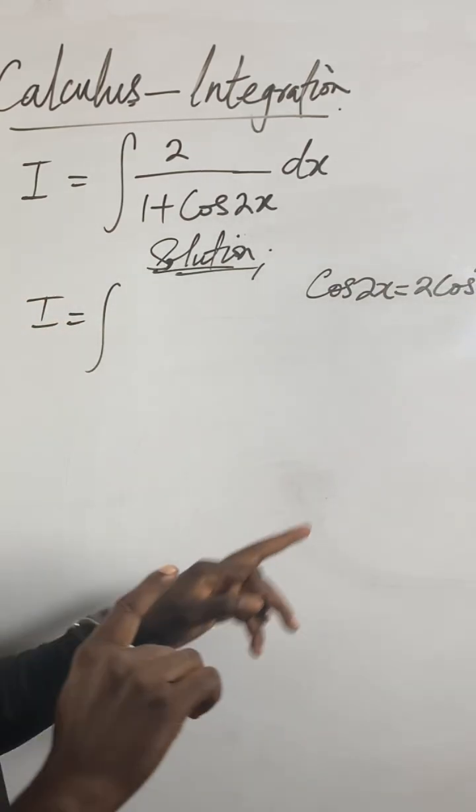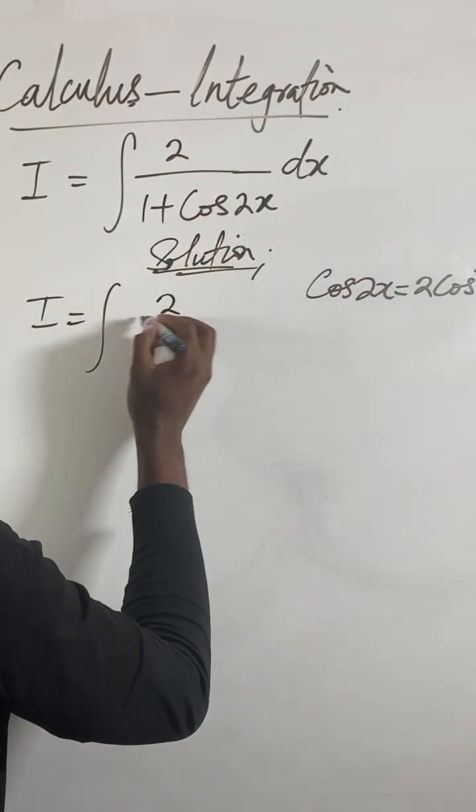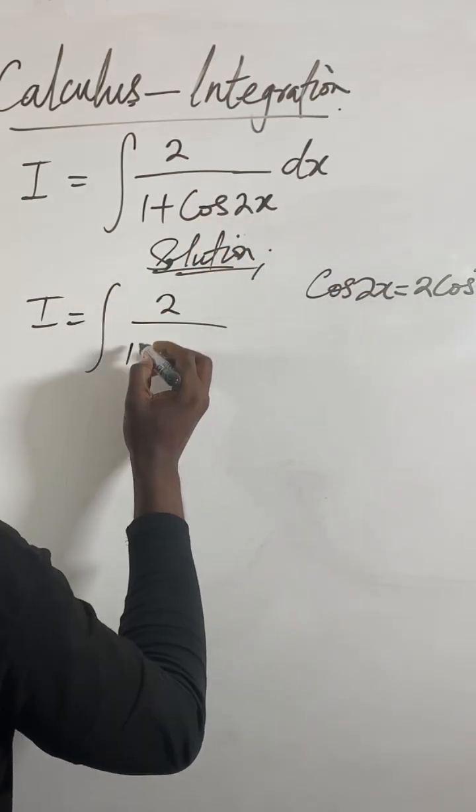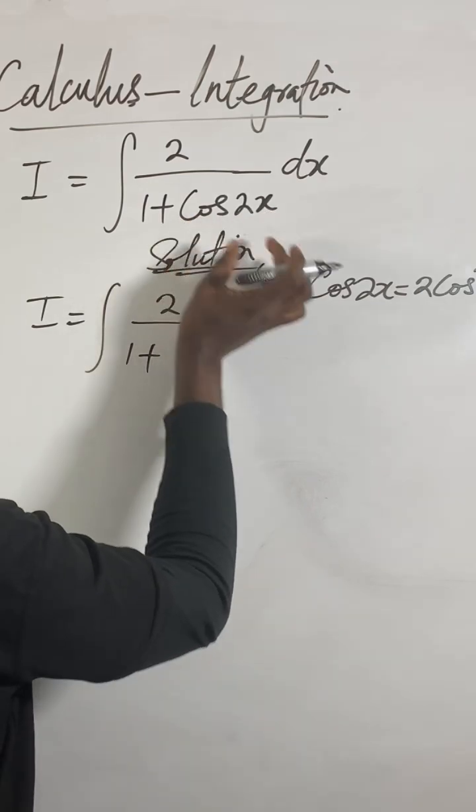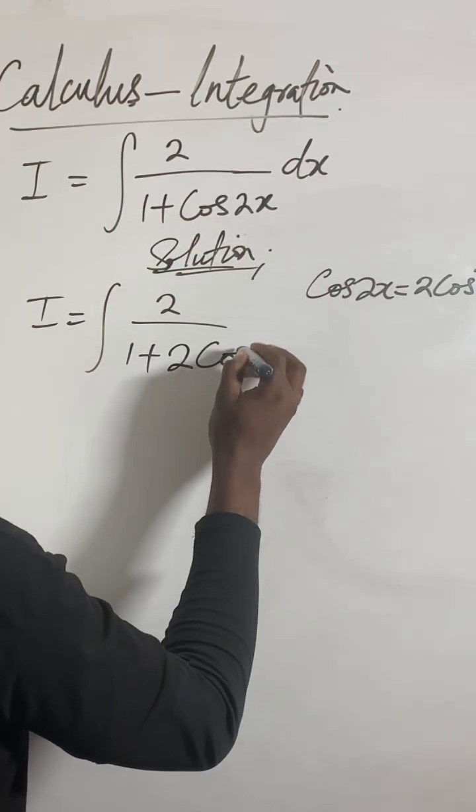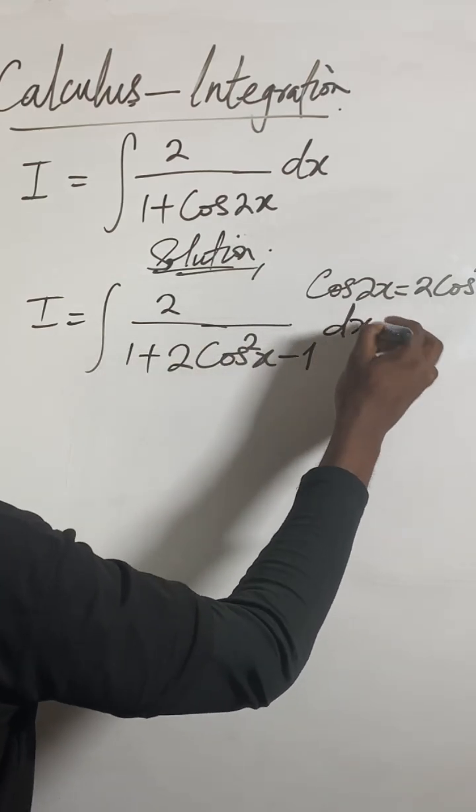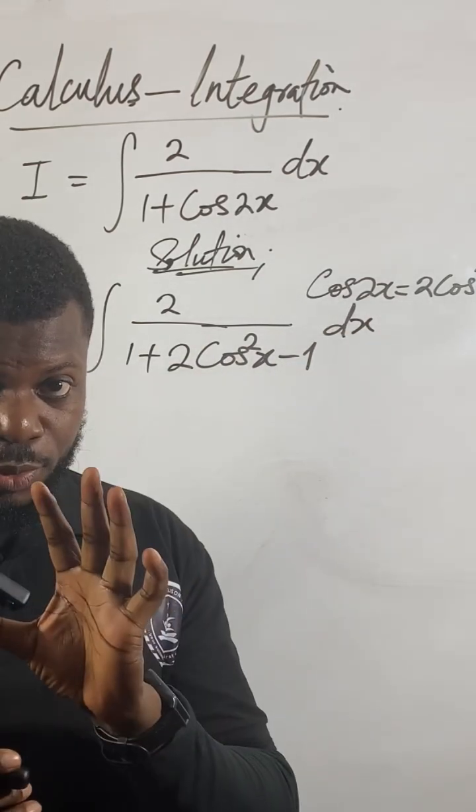So now I'm going to replace this one. I'll get 2 over 1 plus, in place of this cos2x, I'm going to replace it with 2cos²x - 1, with respect to x. Remember I still haven't integrated yet. I've just used the formula to substitute. The reason why I do that is because I want to eliminate so that it will be easier for me to integrate.